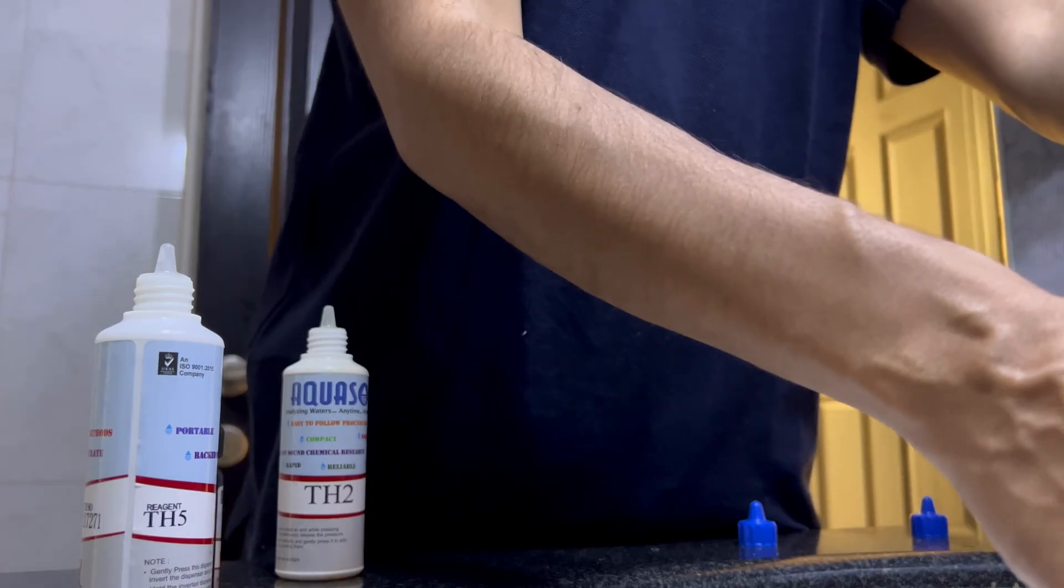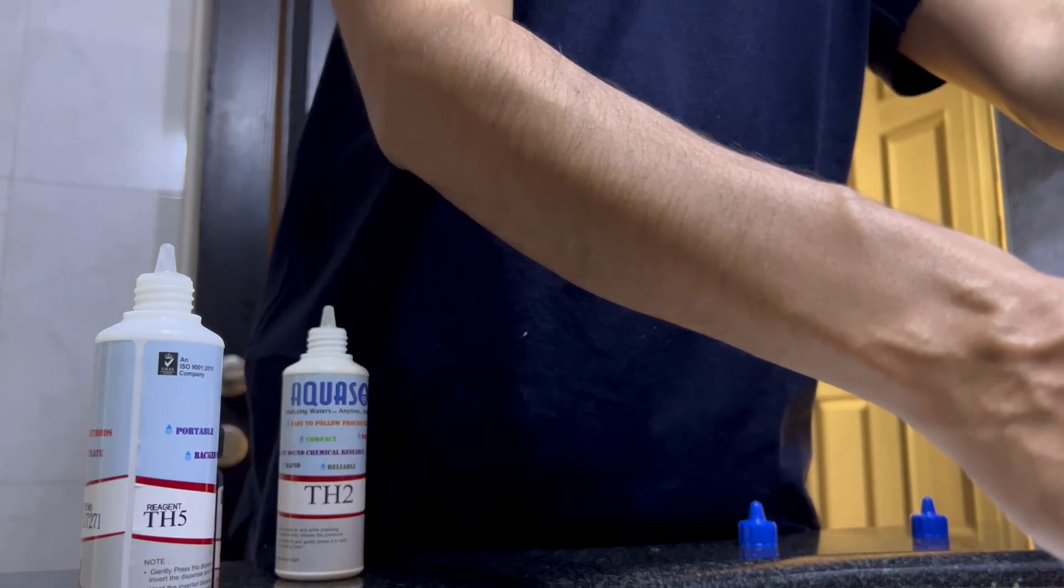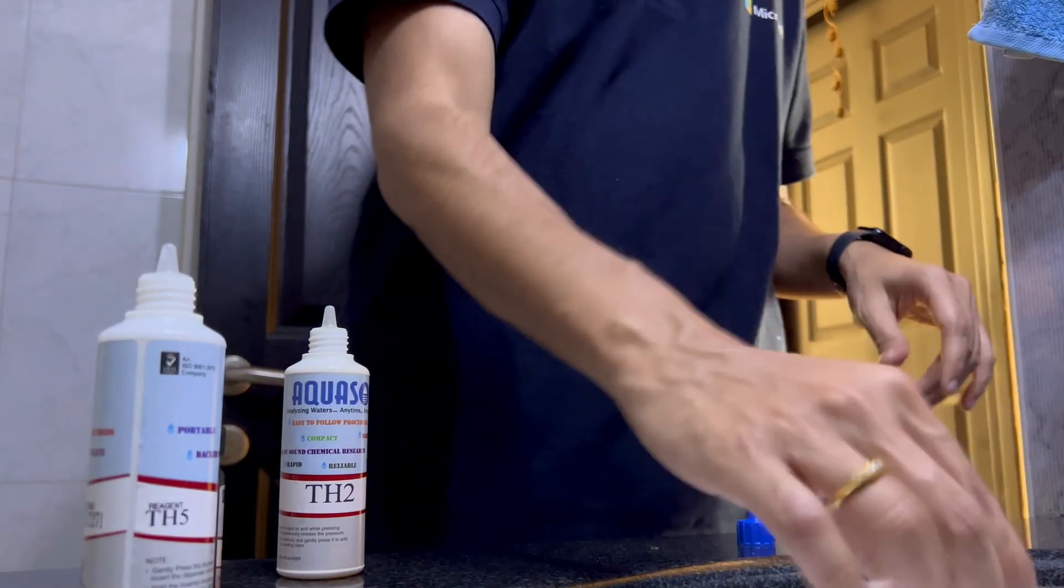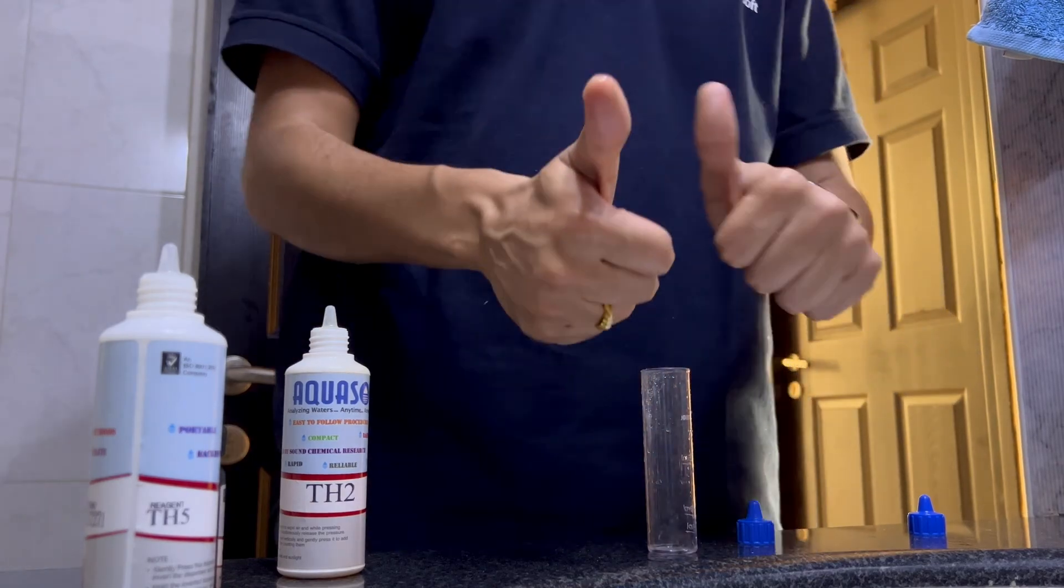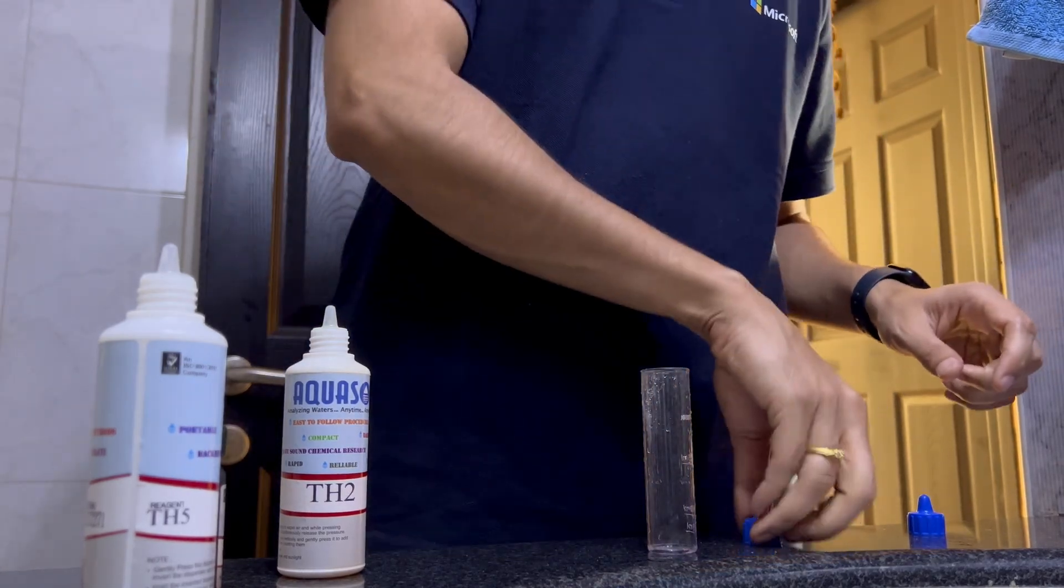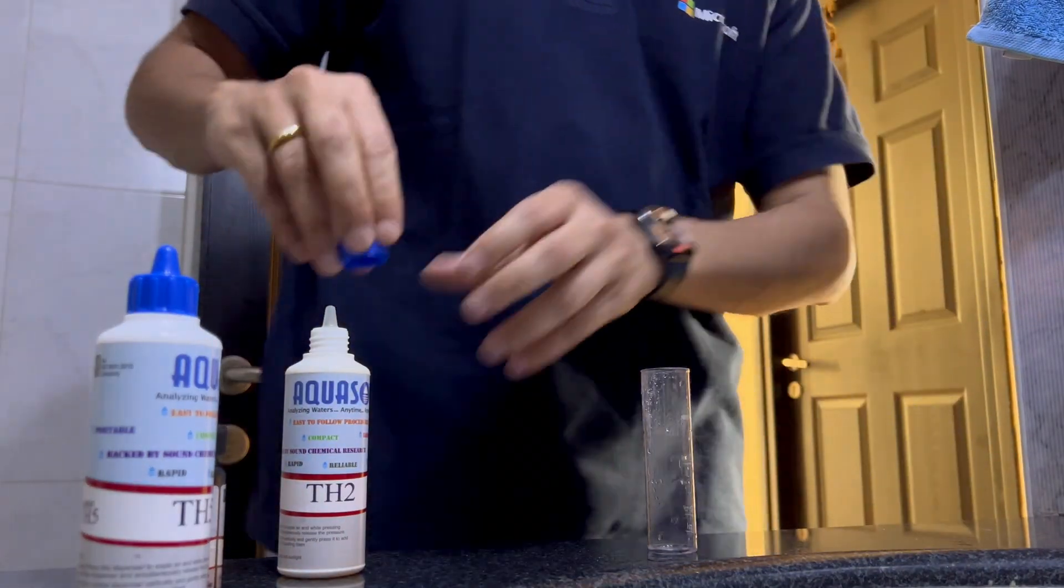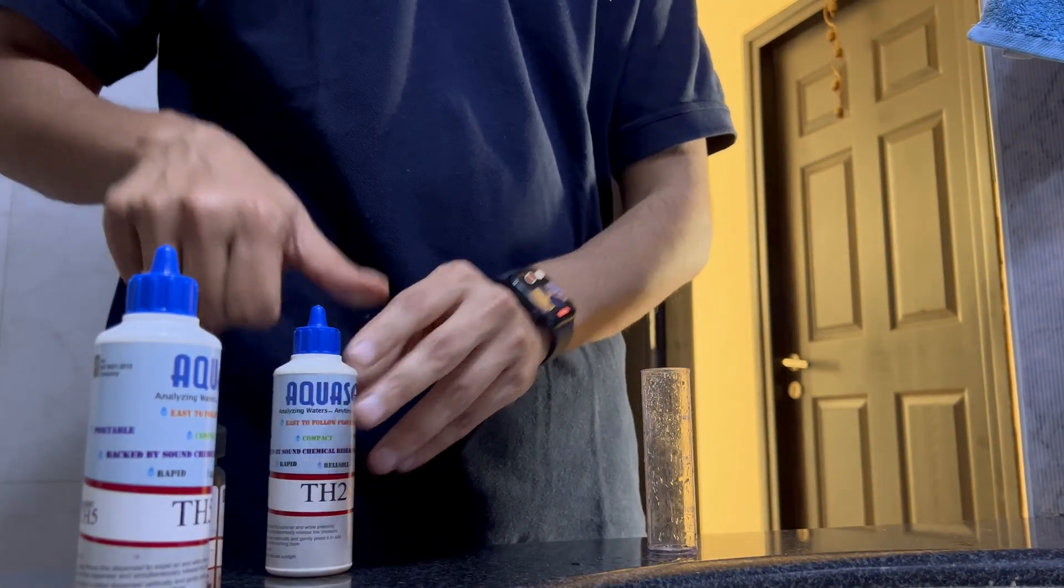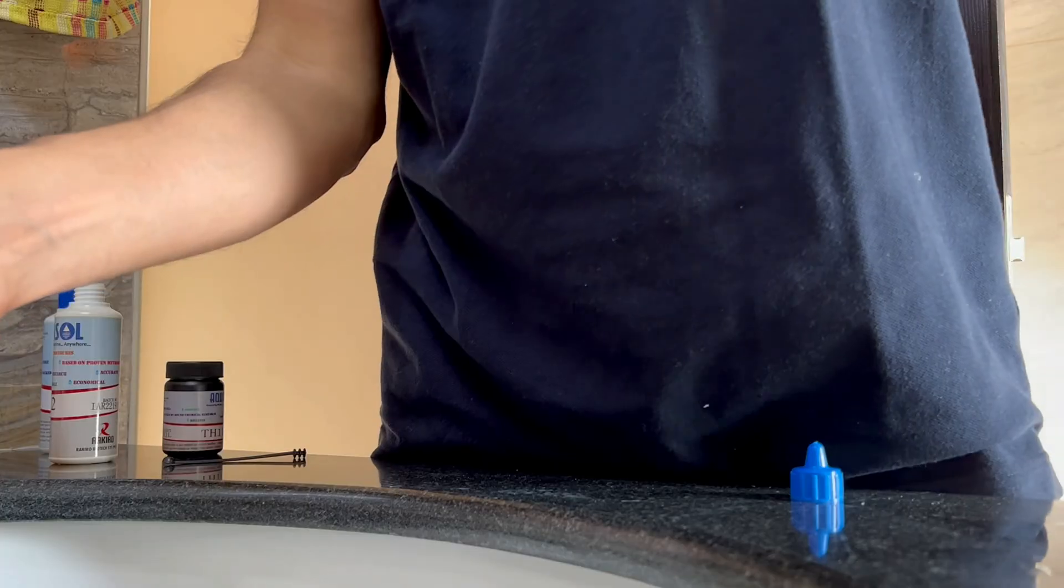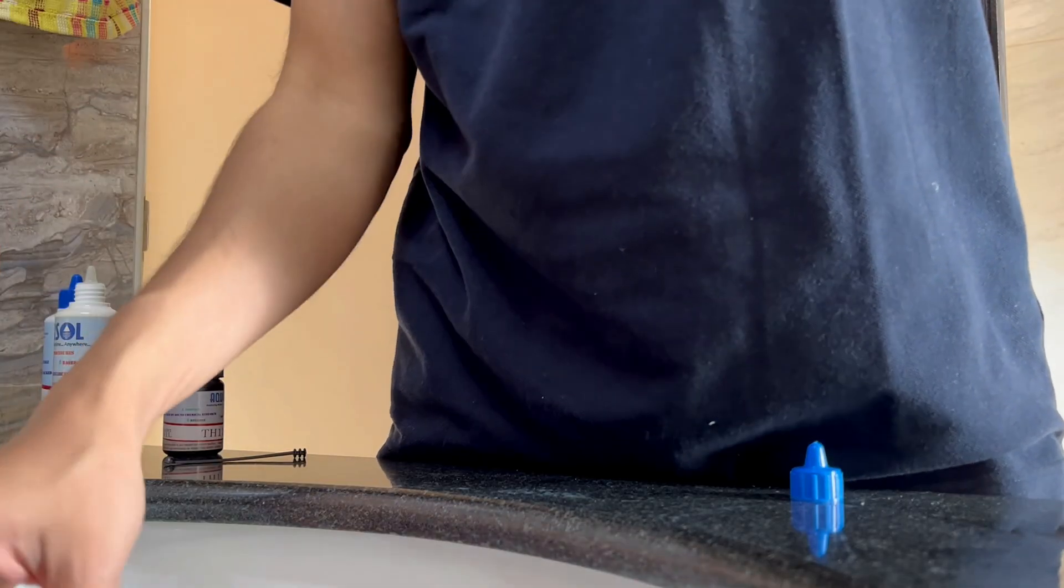It has changed to blue so it took more than 30 drops. I'm sure I've got a couple of drops more while I was inserting the drop so let me take the bare minimum 30 as the number. 30 multiplied by 25 is 750 so that's the current hardness of the water. Let's go back to the other bathroom and test the softened water from the softener and see the results.